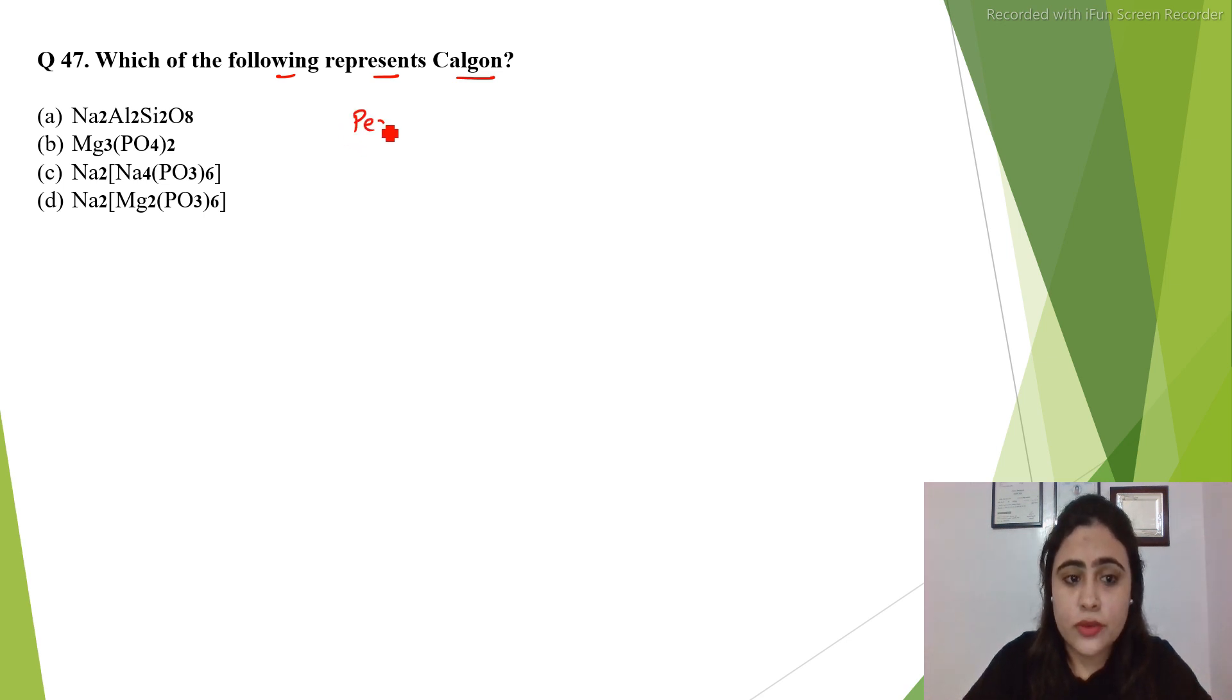There are two types of hardness of water: permanent hardness and temporary hardness. Permanent hardness is due to chloride and sulphate of magnesium and calcium.